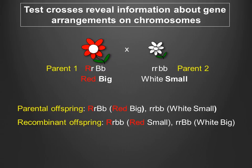A test cross is a cross of an individual that is a heterozygote for both genes with an individual that is homozygous recessive for both genes. The concept behind a test cross is very simple. Test crosses result in two kinds of offspring: parental and recombinant offspring.